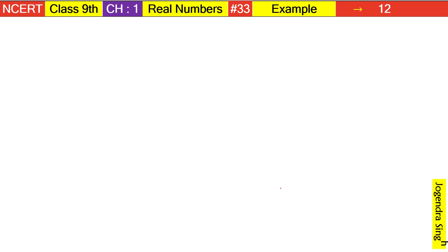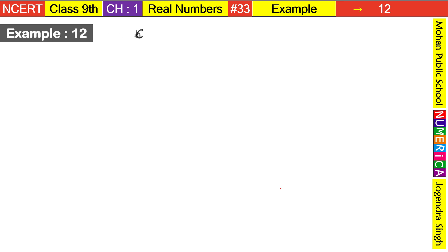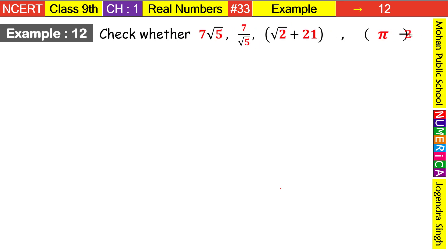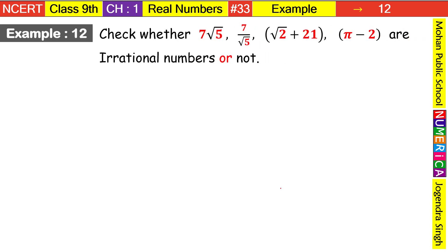Hello everyone, I am Jogunder Singh and you are watching Class 9 Chapter 1 Real Numbers Example No. 12. This example says: check whether 7√5, 7/√5, √2 + 21, and π - 2 are irrational numbers or not.